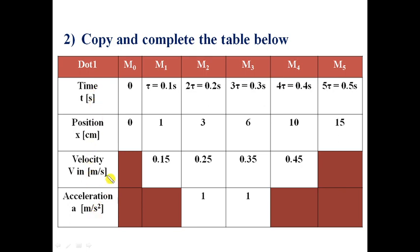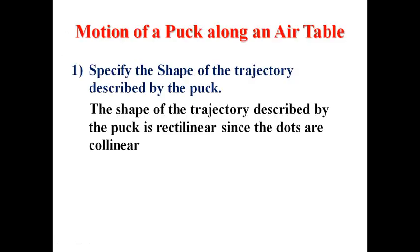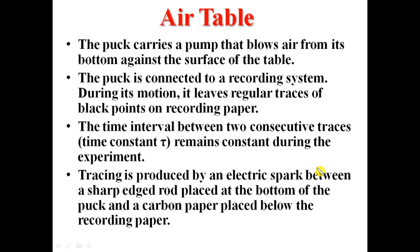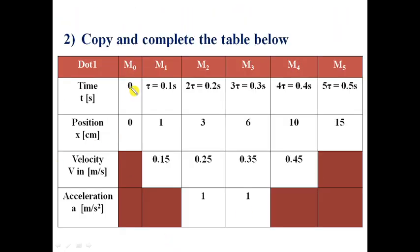If we start from M0, what is the time needed to reach M1? Tau, 0.1 second. Time needed to reach M2? 0.1, 0.1, 0.2. Time needed to reach M3? Tau, 0.2, 0.2, 0.3. And so on.